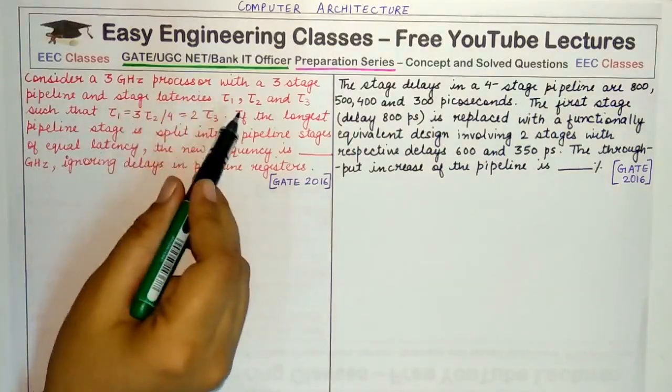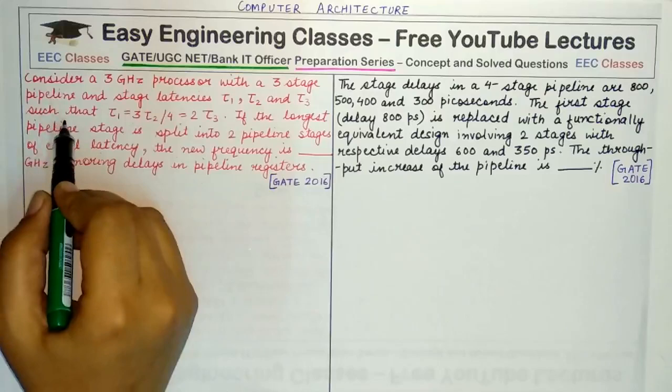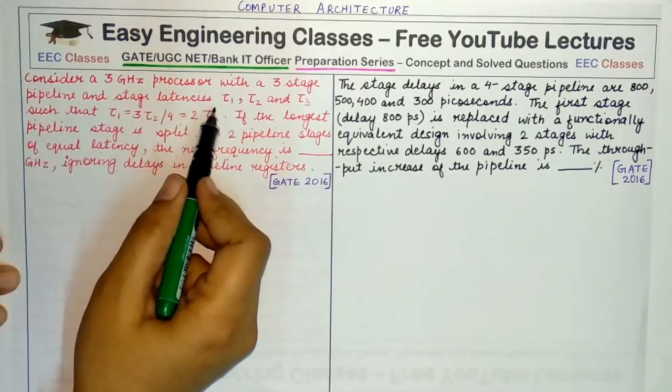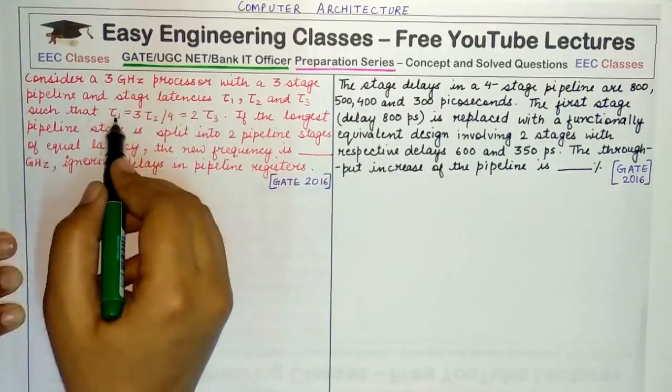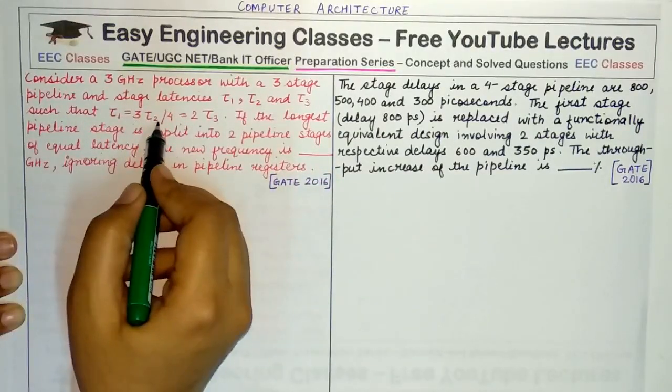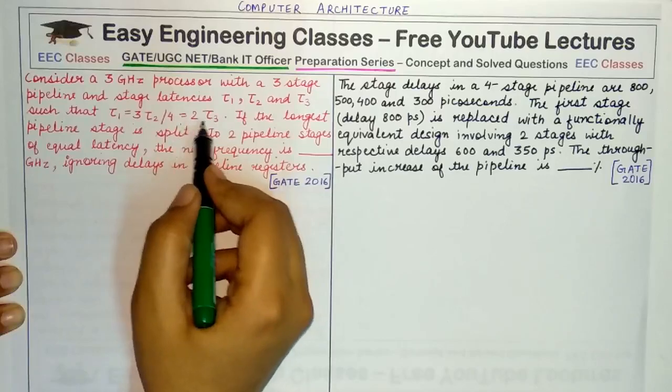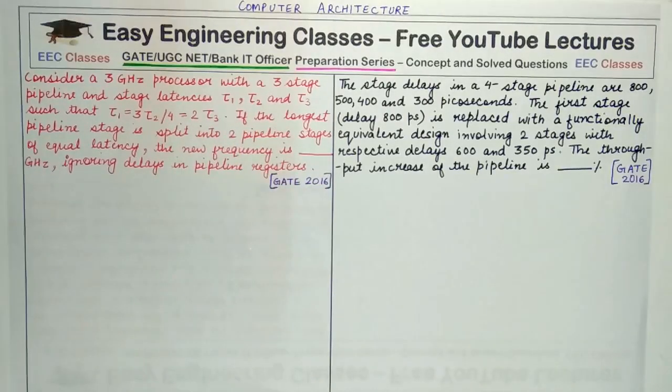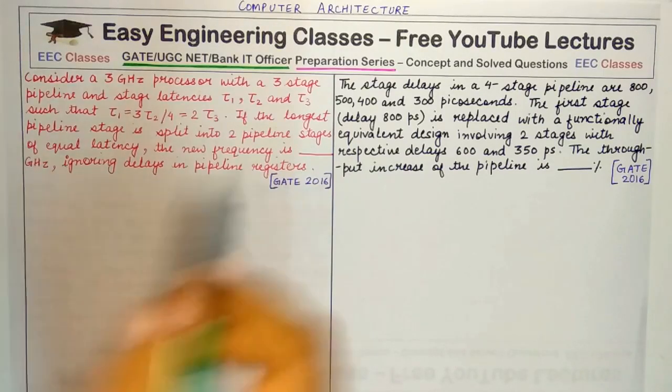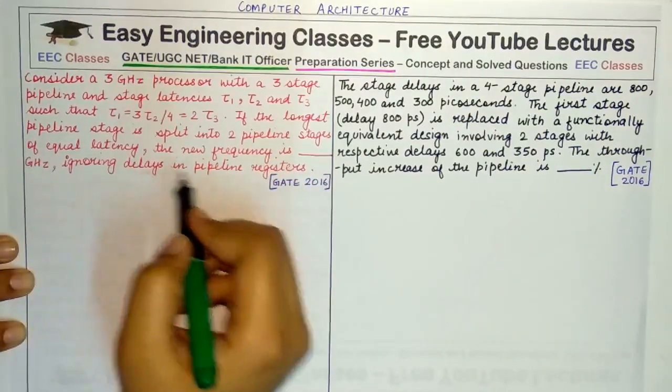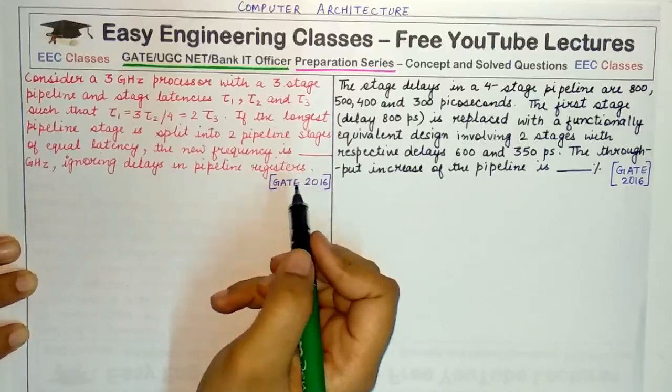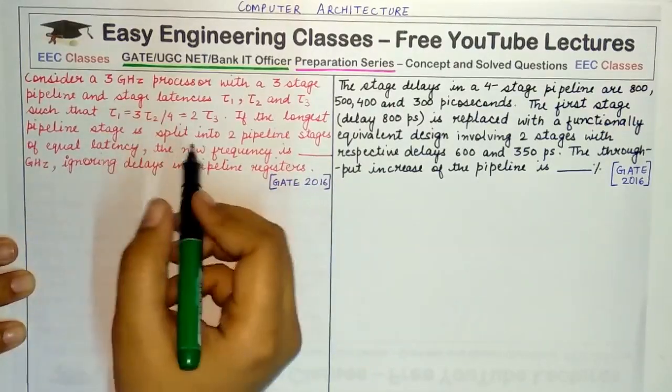So we'll start with the first question. The question states: Consider a 3 GHz processor with a 3-stage pipeline and stage latencies as τ1, τ2, and τ3 such that τ1 = 3τ2/4 = 2τ3. If the largest pipeline stage is split into two pipeline stages of equal latencies, the new frequency is ___ GHz, ignoring the delays in pipeline registers.